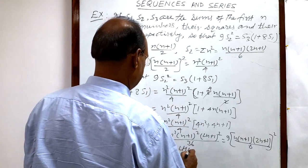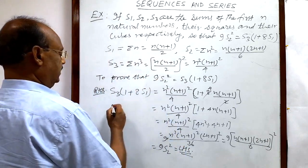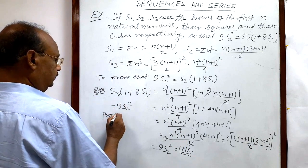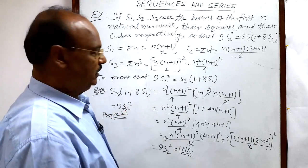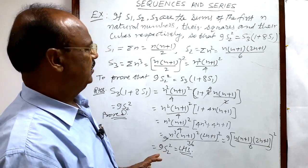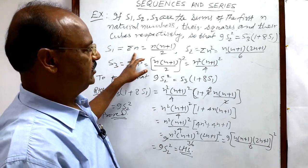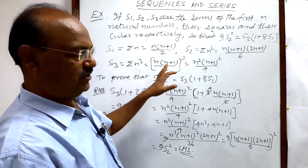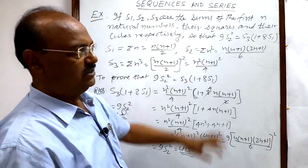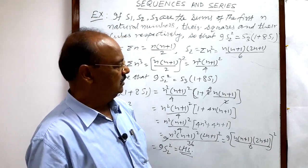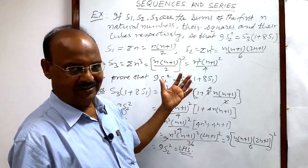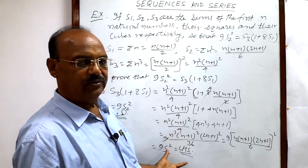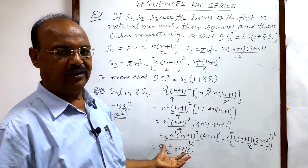This equals 9 S2 squared, which is the left hand side. So we have proved the result. The question is very interesting but simple — you just have to remember the formula for the sum of n natural numbers, sum of squares, and sum of cubes. If you remember the formulas, just substitute and the result comes out very easily. Thank you for watching.